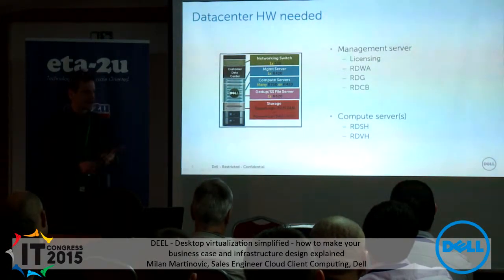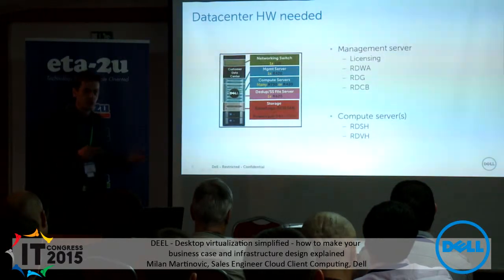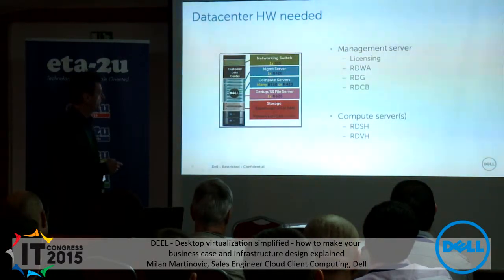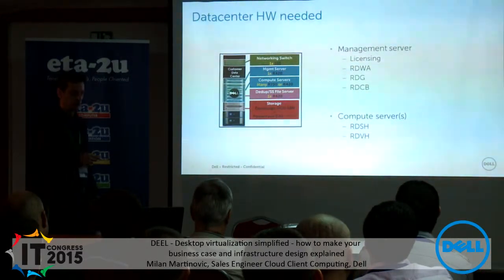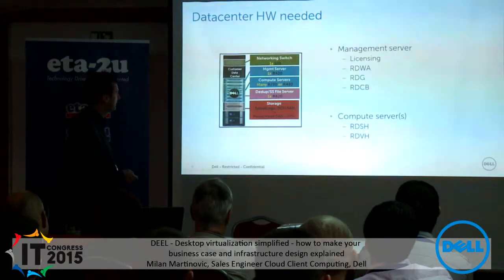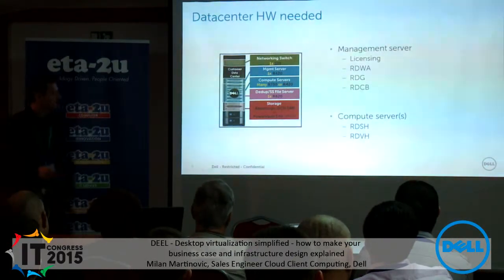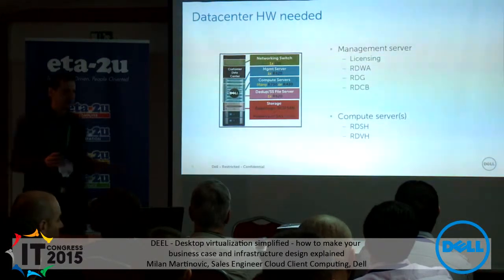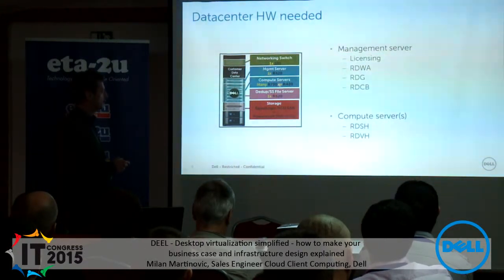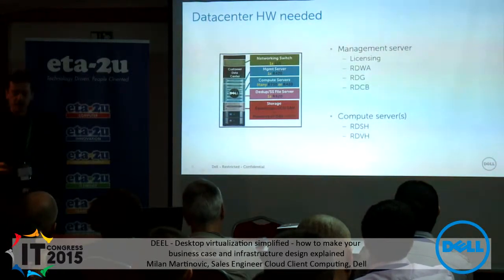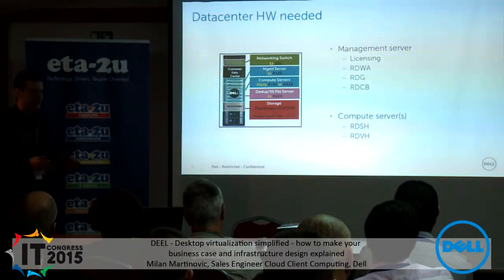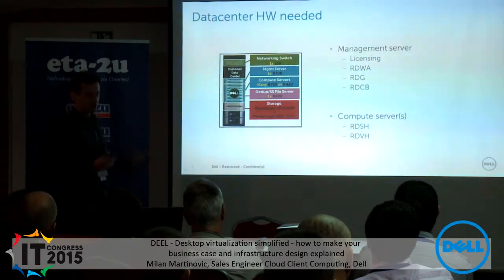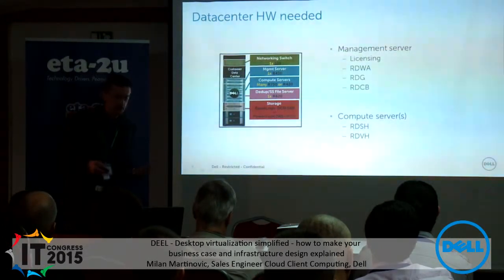On the management server you place the licensing server, connection broker, gateway virtual machines — these can all be VMs. If you are using a high availability scenario, you will need two management servers. For the compute servers, you have a few options: you can use a smaller server or a more powerful server with a bigger consolidation rate and higher user density per server. Depending on whether you have a large or small number of users, one or the other scenario will be more efficient.